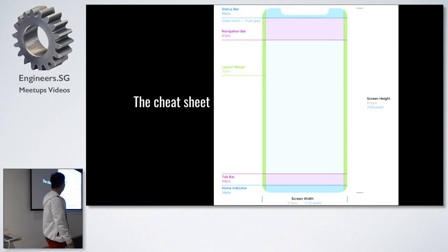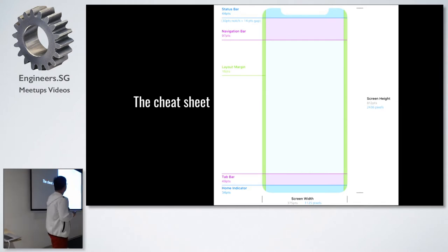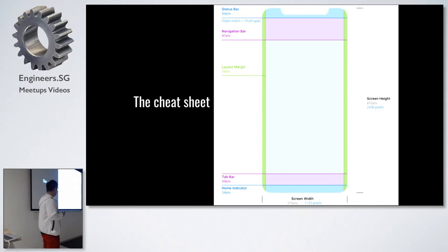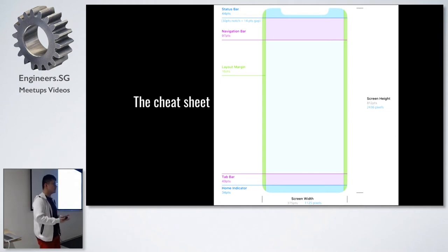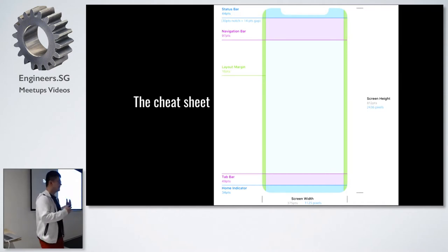Here's the cheat sheet. There is a 44-point status bar, followed by a 44-point navigation bar. At the bottom, you have a 49-point tab bar and a 34-point home indicator. As developers we need to keep this in mind when measuring against designs, but this is only for debugging purposes — we should never hard-code those values. We never know what new metrics will appear in the future, so never use these magic numbers in your code.